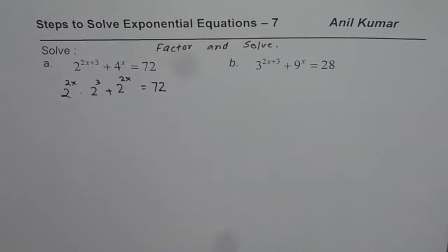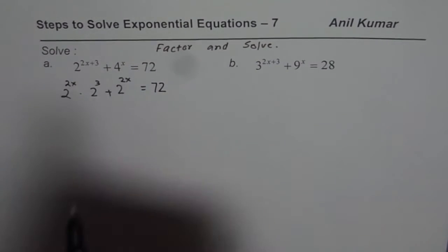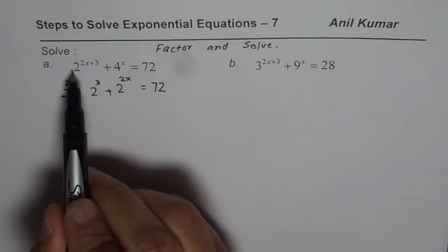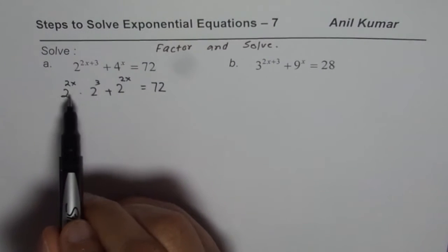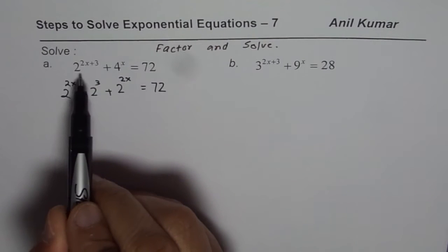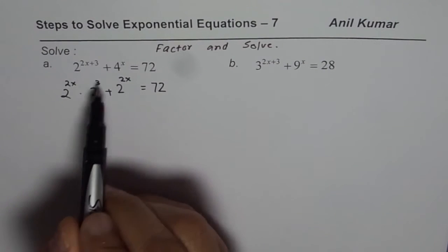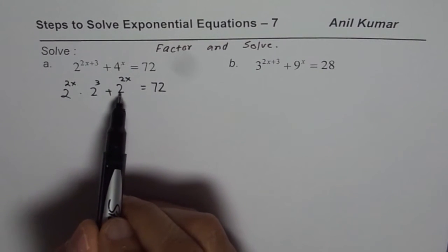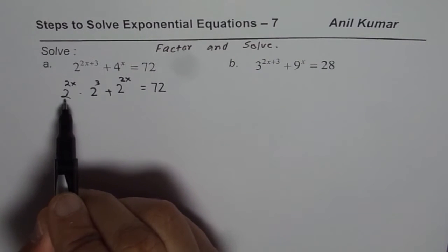In the first step we have done the most difficult part, which is writing the term with its components, which are its factors. 2 to the power of 2x times 2 to the power of 3 means 2 to the power of 2x plus 3, and 4 to the power of x means 2 to the power of 2x.